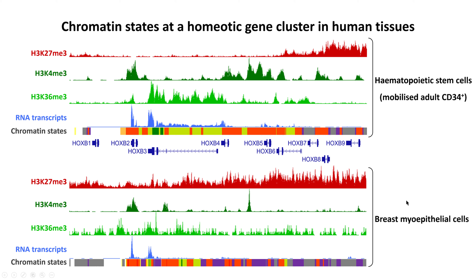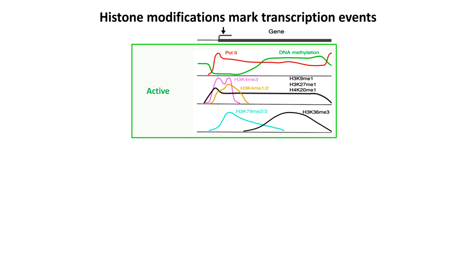That gives some insight into real data of what histone modifications look like across a genome in quite a complex locus like the HoxB clusters. I want to end this lecture with a take-home slide to help summarize where you would find histone modifications for an average gene in the genome.